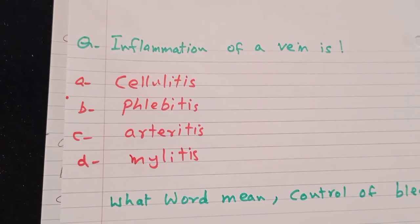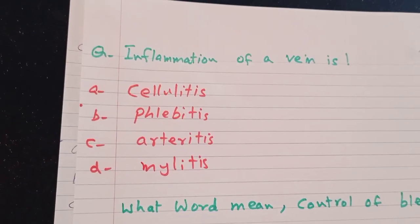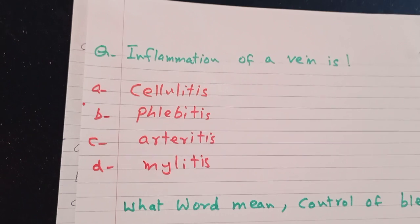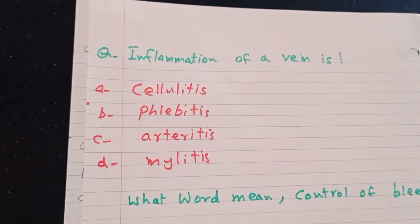Inflammation of a vein is known as cellulitis, phlebitis, arthritis, myelitis. The answer is B, phlebitis.